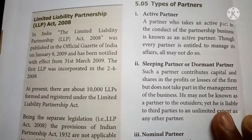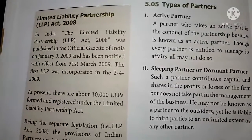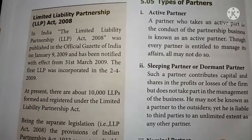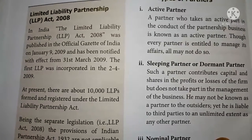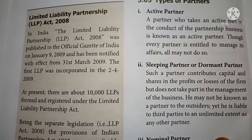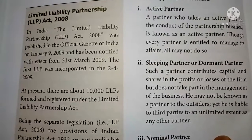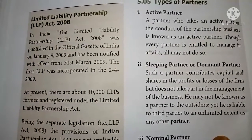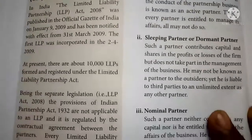We now discuss the various kinds, or types, of partners. The first type is the active partner, who takes part in the management and also contributes capital. A partner who takes an active part in the conduct of the partnership firm is known as an active partner. Every partner is entitled to manage its affairs, though all may not choose to do so.